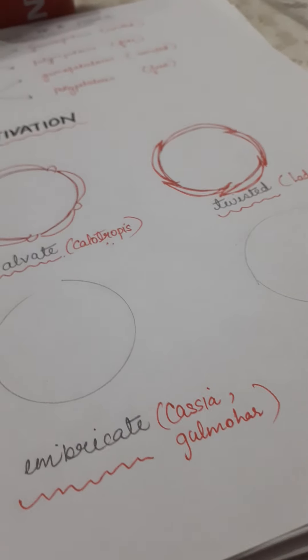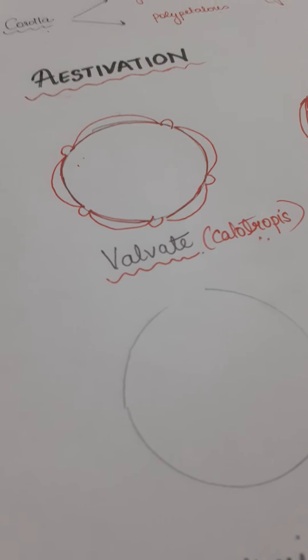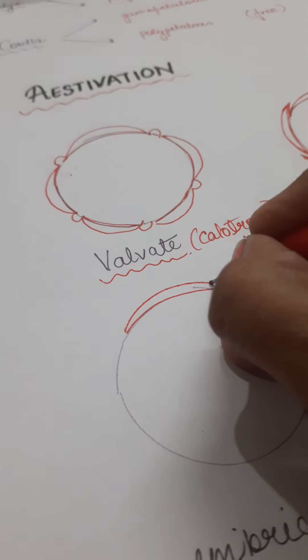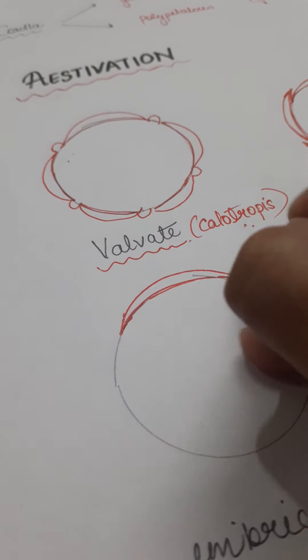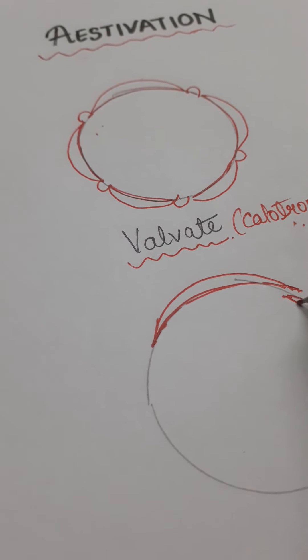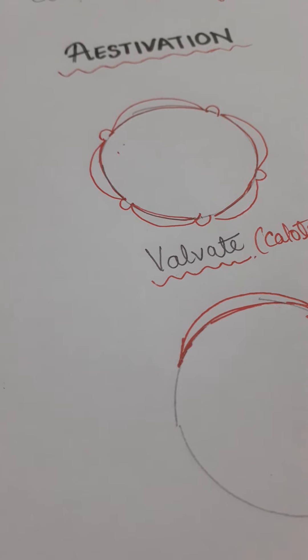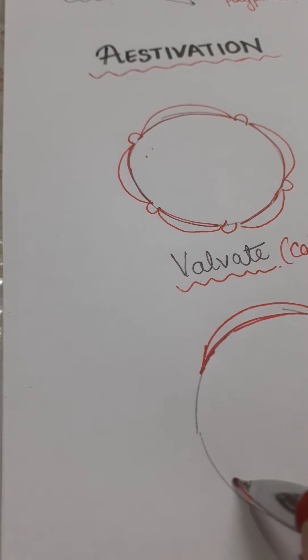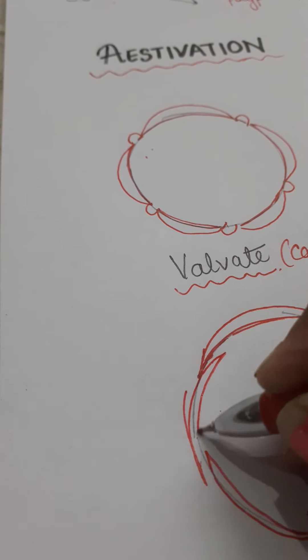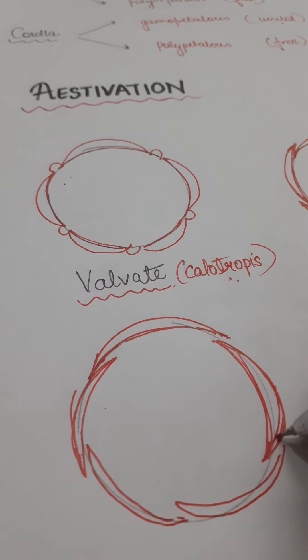Imbricate aestivation, the third type, found in Cassia fistula and Gulmohar. This is something where overlapping is random. Like one outside, one inside and three are overlapping. It means one petal or sepal is completely outside. Both of its ends are overlapping the other ones. Then one would be completely inside. And rest of the three will be overlapping type. One, two and the third one like this.